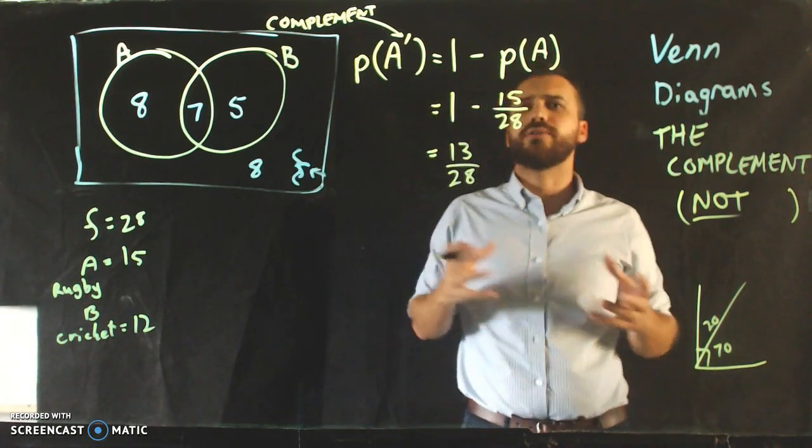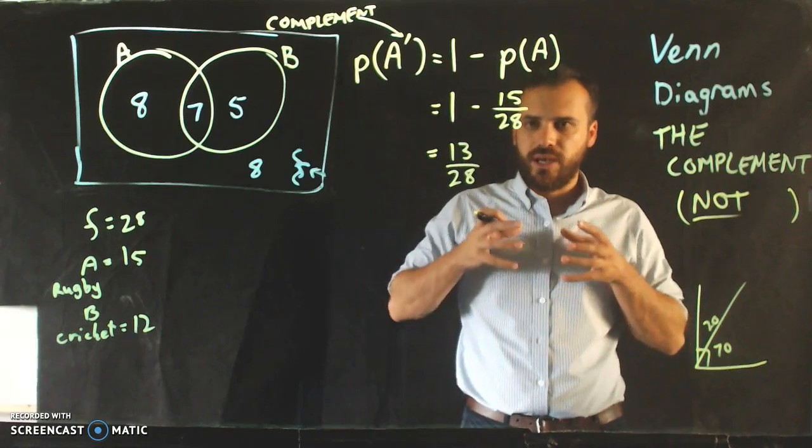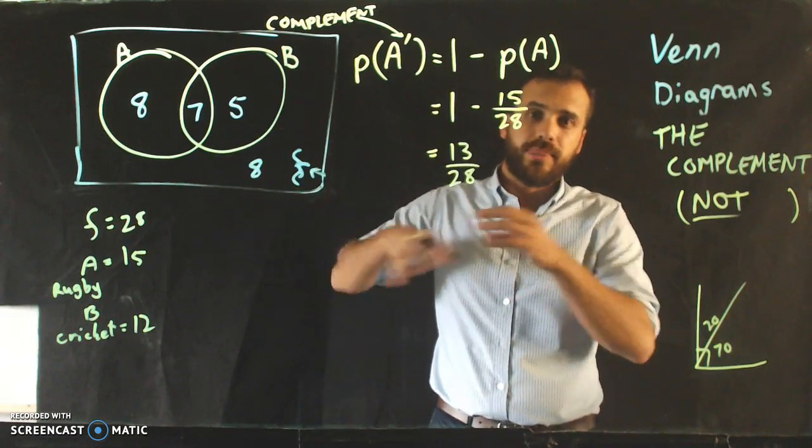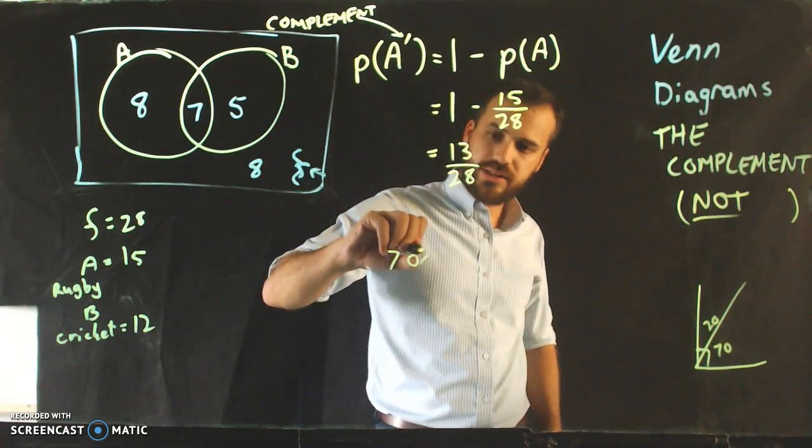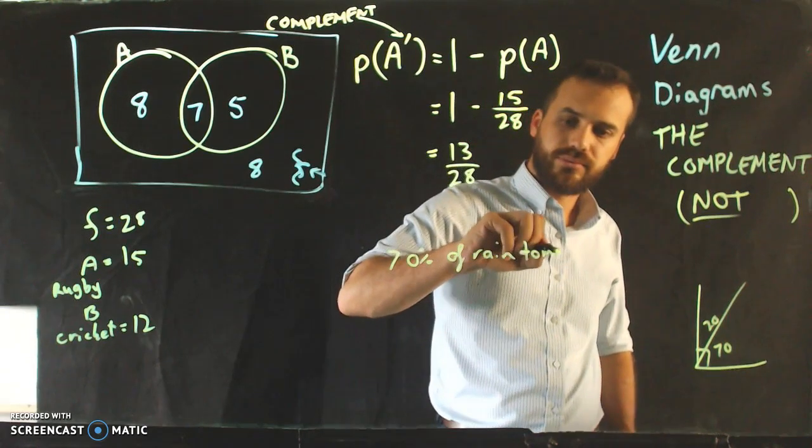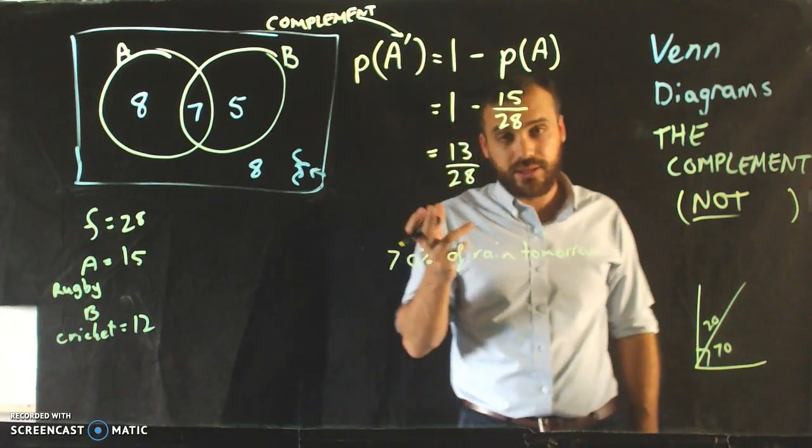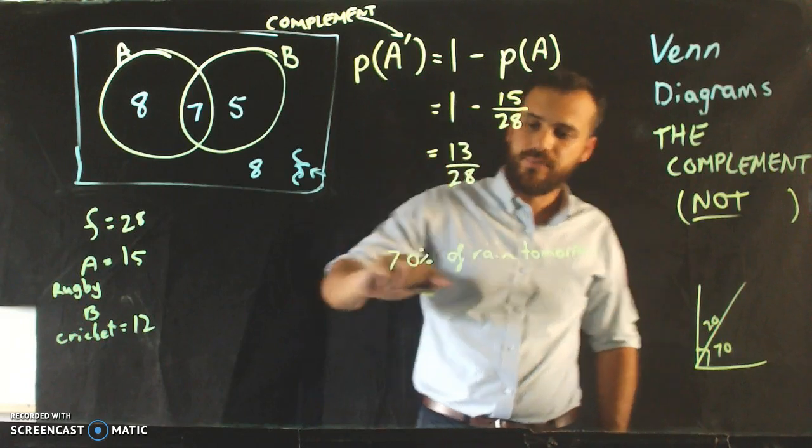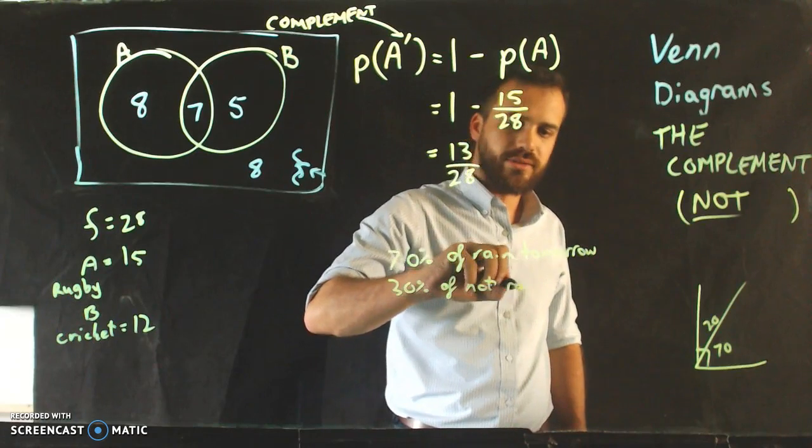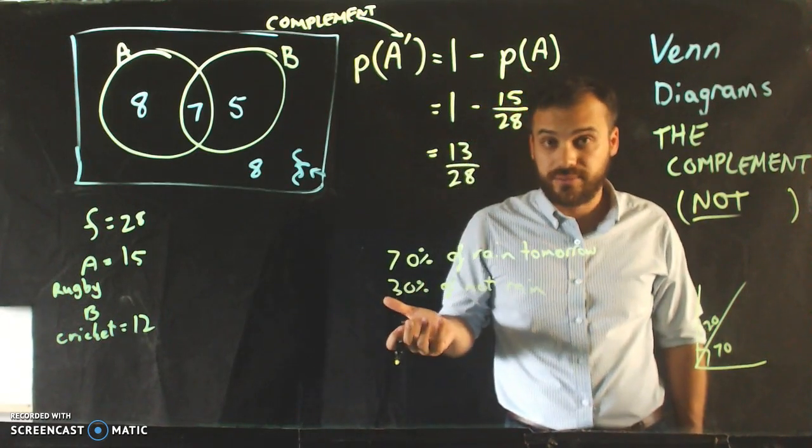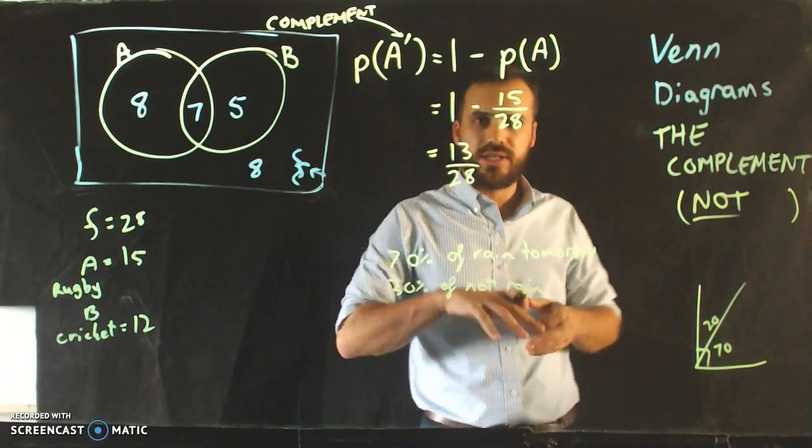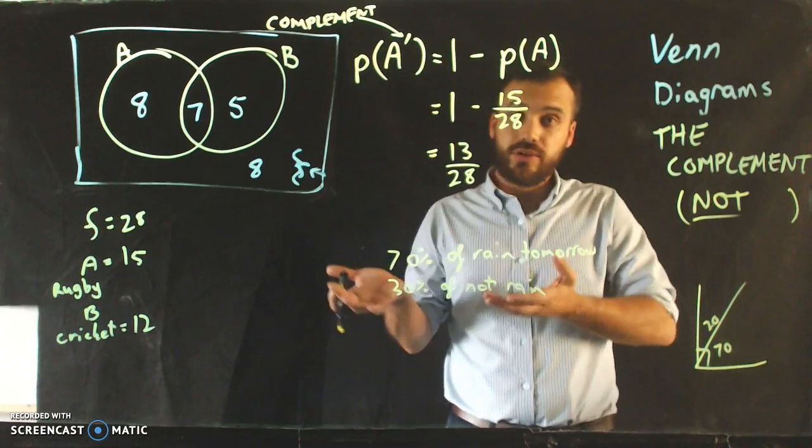Now this has wide-ranging applications. For instance, forget about Venn diagrams for a second. Let's say there's a 70% chance of rain tomorrow. Then you all immediately know that there's a 30% chance of not rain, because something has to happen. We can talk about snow and all the rest of it, but considering that it's either rain or not rain, 70% chance of rain means there's a 30% chance of not rain.